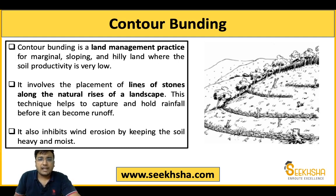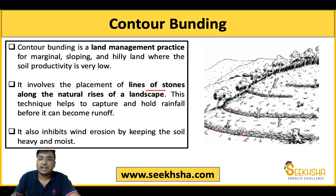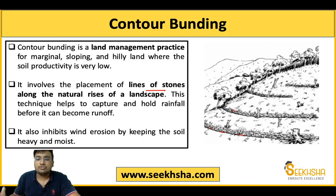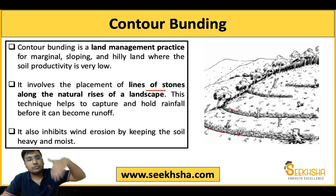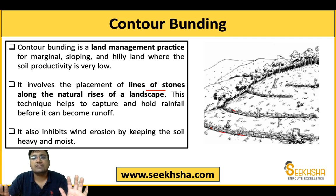In contour bunding, you make a stone line — like a wall — along the natural contour of the slope. Because there is a natural slope, soil and water tend to run downward. These walls made of stones and sand help retain the water and soil, preventing runoff, and thus aid in water and soil conservation on the hillside.